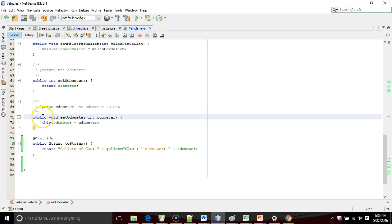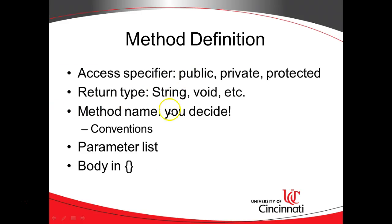So you see the word public, which is the access modifier, and then void. After that, we have the method name, which is something that you can decide. The conventions for method names: it should be camel case, which is lowercase first word, every word that follows has the first letter uppercase. It should not be Pascal case, which is where the first letter of every word, including the first word, is uppercase. So a subtle difference between the two, Pascal case and camel case.